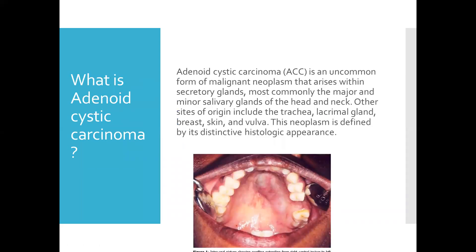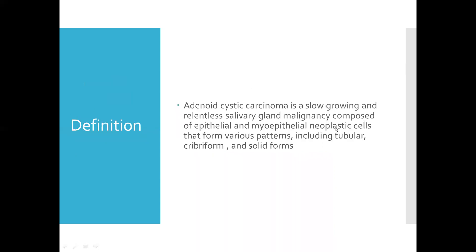Adenoid cystic carcinoma is an uncommon form of malignant neoplasm that arises within secretory glands, most commonly the major and minor salivary glands of the head and neck. Other sites of origin include the trachea, lacrimal gland, breast, skin, and vulva. This neoplasm is distinguished by its distinctive histologic appearance — tubular, cribriform, and solid forms.